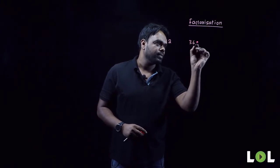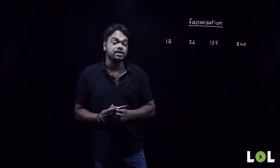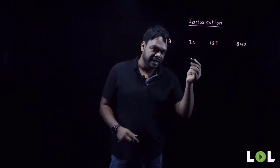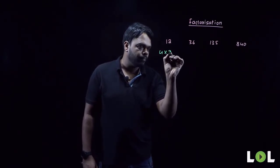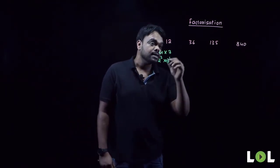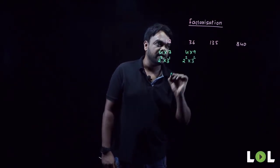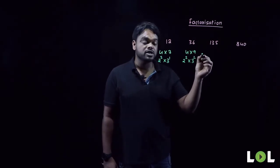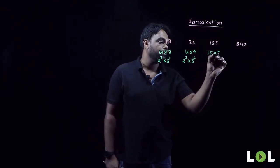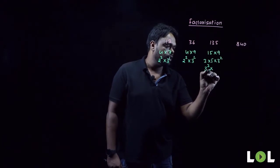Let's understand what factorization is technically. Take numbers like 12, 36, 135, and 840. For 12: 4 into 3, where 4 is 2 squared and 3 is 3 to the power 1. For 36: 4 into 9, where 4 is 2 squared and 9 is 3 squared. For 135: written as 15 into 9, where 15 is 3 into 5 and 9 is 3 squared — altogether 3 cubed into 5 to the power 1.